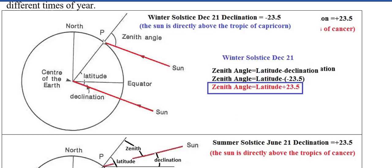We've got some person located at a particular latitude north of the equator. Right there is where the person's standing, and the straight-up direction is here. The sun's rays are coming in on December 21st directly over the Tropic of Capricorn, at minus 23.5 degrees, or 23.5 degrees south. We can see that the zenith angle — the angle between the straight-up direction and the direction the sun's coming in — is the same as this angle down here, because we're assuming that these rays of sunlight are parallel to each other.